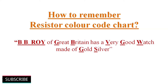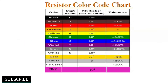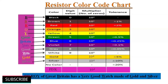BB Roy of Great Britain has a very good watch made of gold and silver. The capital letters of this mnemonic represent the first letter of the colors and their positions, the digit values. BB Roy represents black, brown, red, orange, yellow, and the rest of the words' starting letters represent respective colors and their values in sequence.